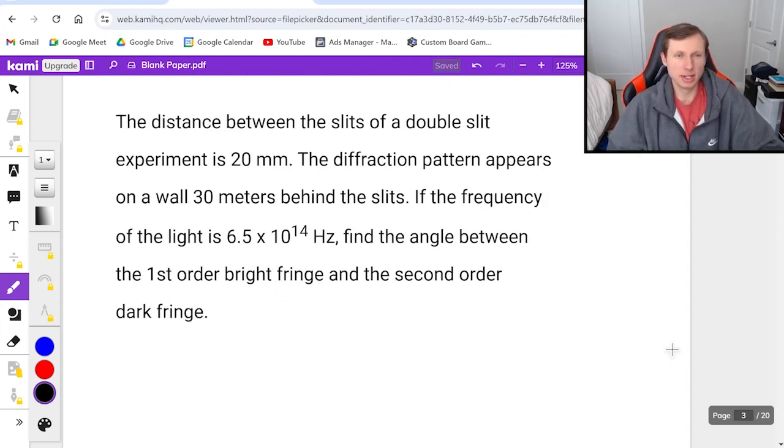Here's the second one: The distance between the slits is 20 millimeters. The diffraction pattern appears on a wall 30 meters behind the slits. If the frequency of the light is 6.5 × 10^14 hertz, find the angle between the first order bright fringe and the second order dark fringe.